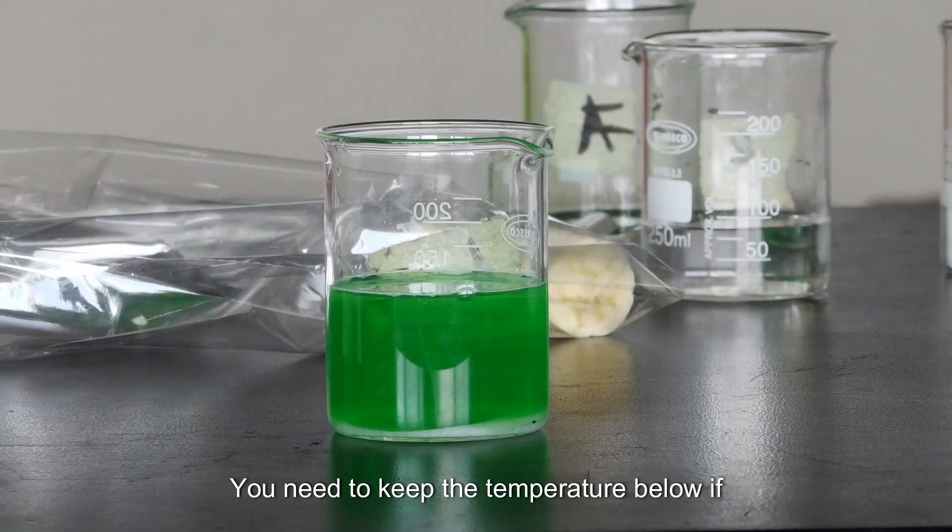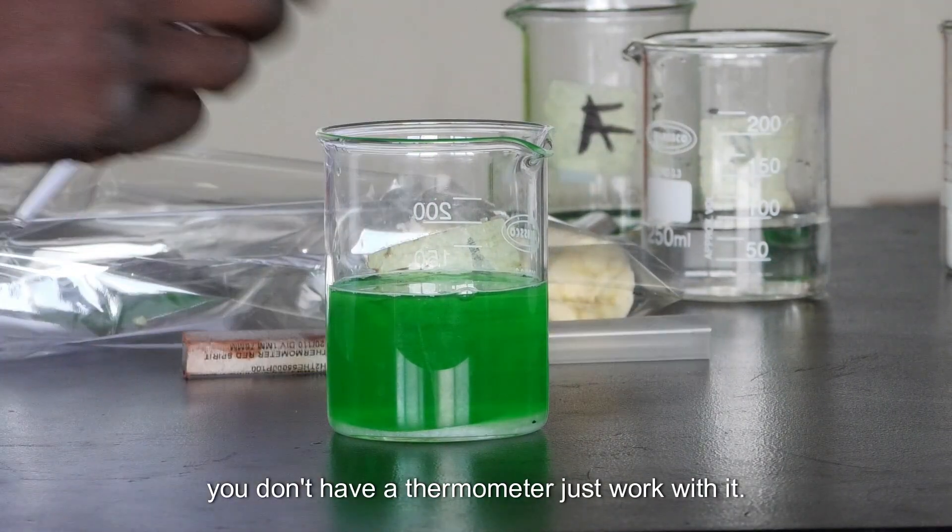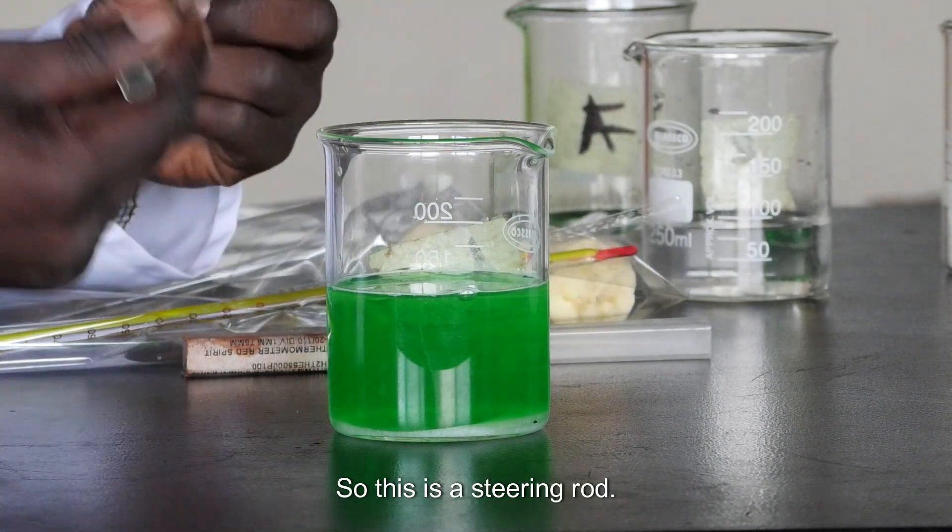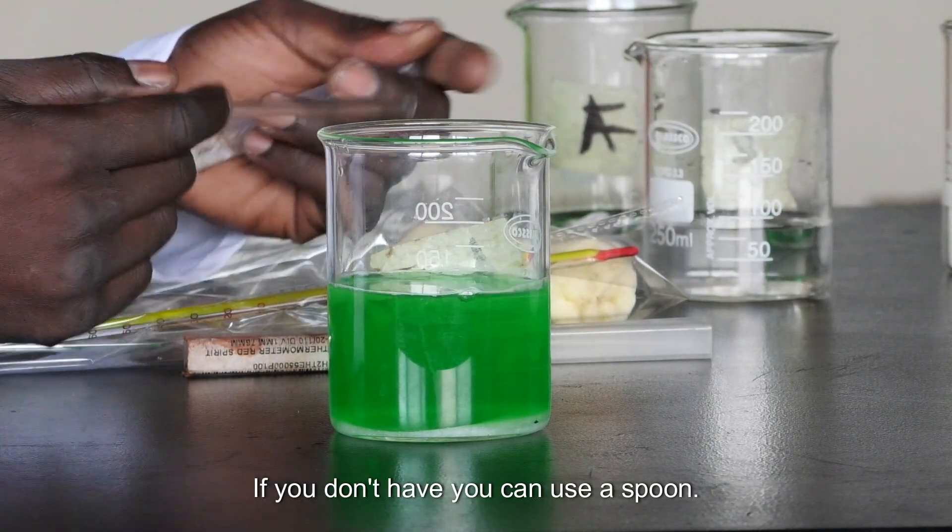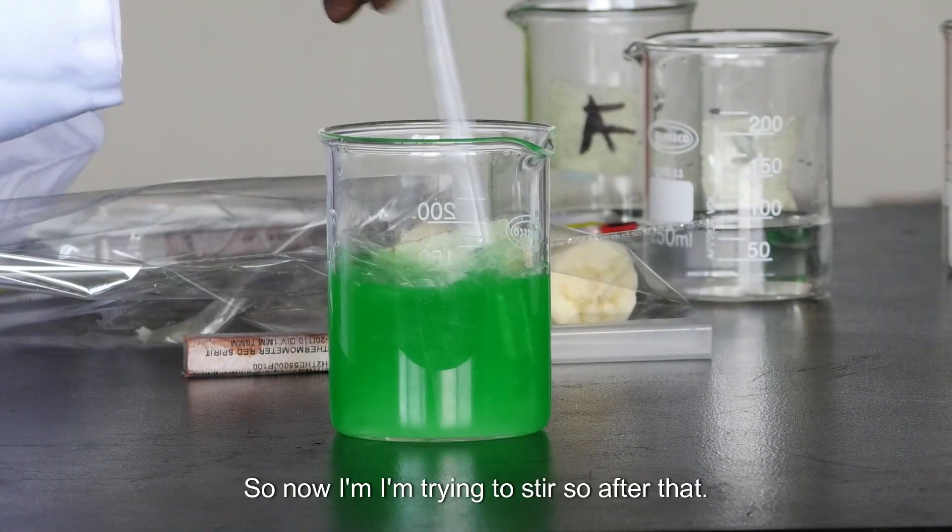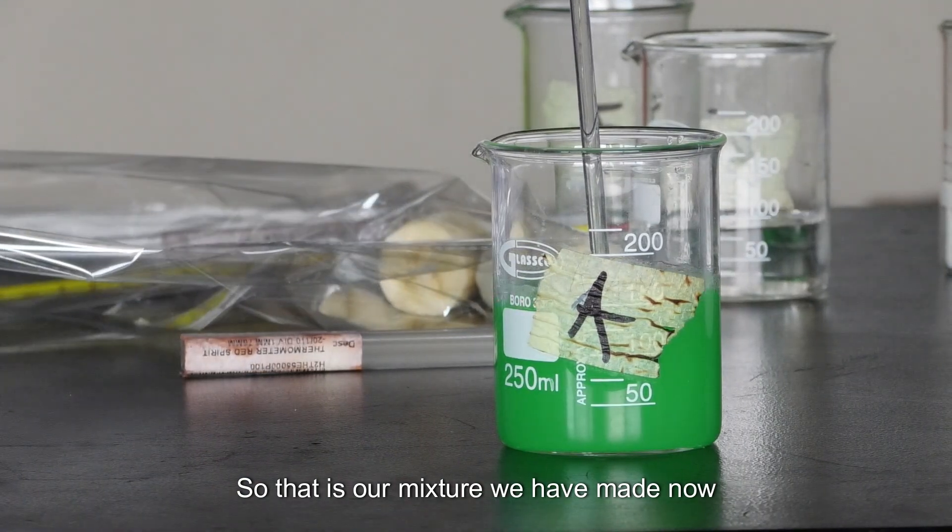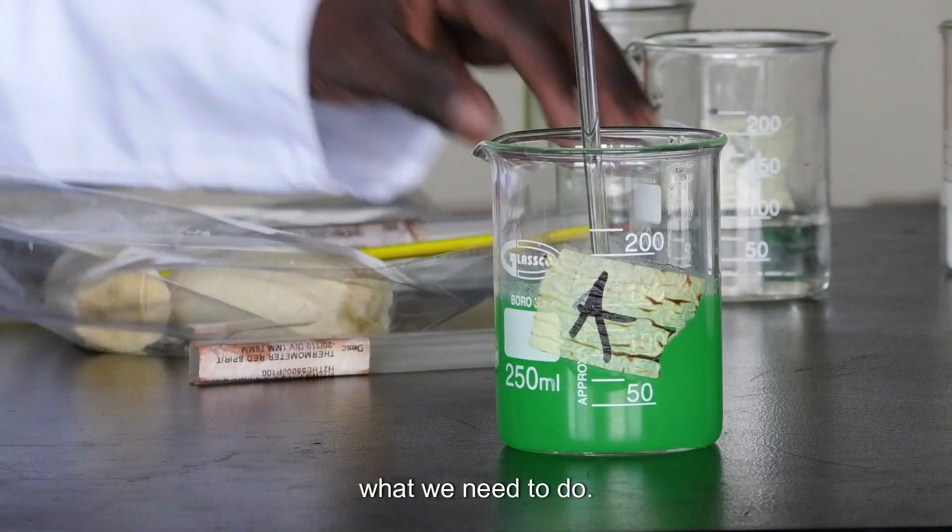So the color doesn't matter. You need to keep the temperature below. If you don't have a thermometer, just work with it. So this is a stirring rod. If you don't have, you can use a spoon. So now I'm trying to stir. So after that, that is our mixture we have made.